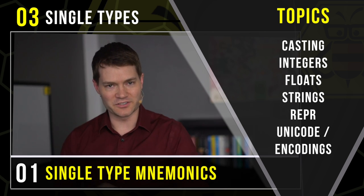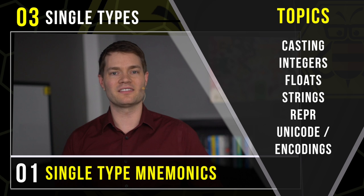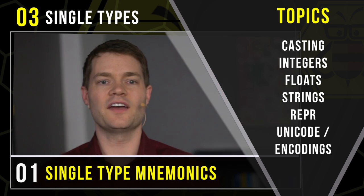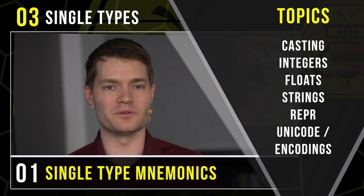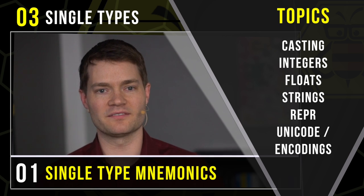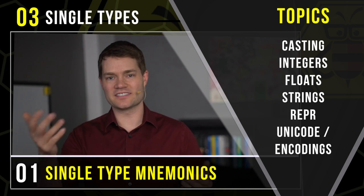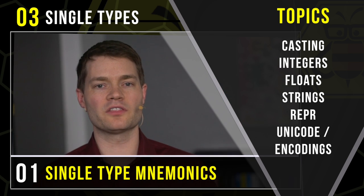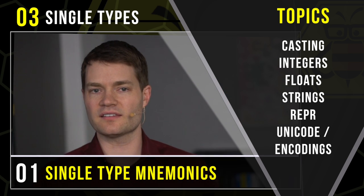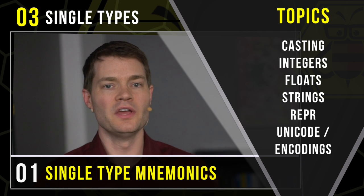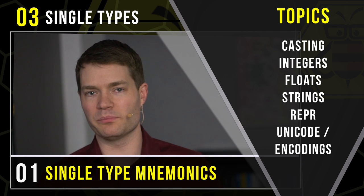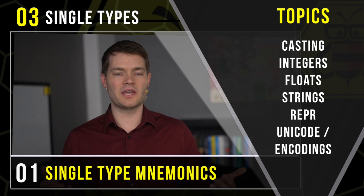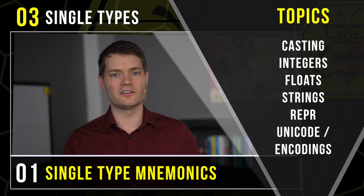Then it's on to integers, one of the most famous types in Python, and we're going to find out exactly what makes an integer an integer. And then we'll talk about floats, another important type in Python. Then we're going to talk about strings and discuss what makes a string type the way it is. We're going to talk about what the repr function does, and finally we'll end by talking about Unicode and encodings.